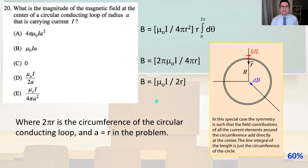Number 20. What is the magnitude of the magnetic field at the center of a circular conducting loop of radius A that is carrying current I? So B is going to equal mu naught I over 4 pi r squared times r times the integral of d theta. And we're doing it from 0 to 2 pi.